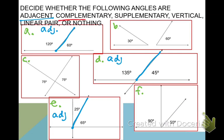Next one, we have complementary. What does complementary mean? They add up to 90. So letter A, does 120 and 60 add up to 90? Definitely not. Does 30 plus 60? Yes. So B is complementary. C, do they add up to 90? No.